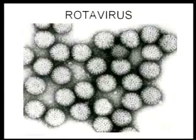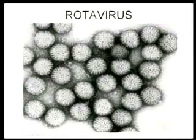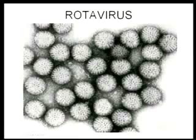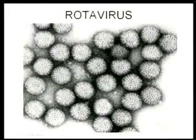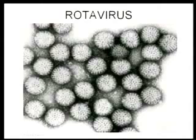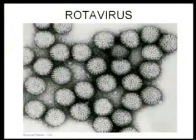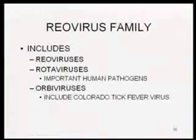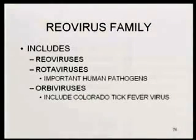Rotaviruses are named after wheels — if you look at the edge of these virions they look rather like a wheel, similar to a Rotary Club lapel pin. So that illustrates what these viruses look like. They don't look as angular when viewed properly because they have these swollen nucleocapsids rather than a really angular shape, but they're still icosahedral. The Reovirus family includes the Reovirus, Rotavirus, and Orbivirus genera — the latter includes Colorado tick virus.